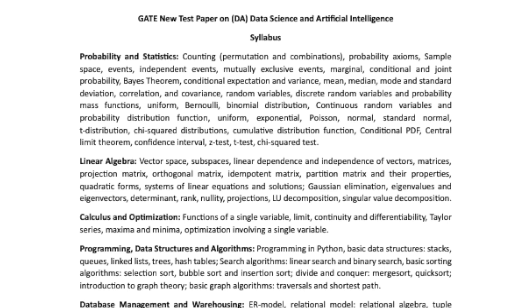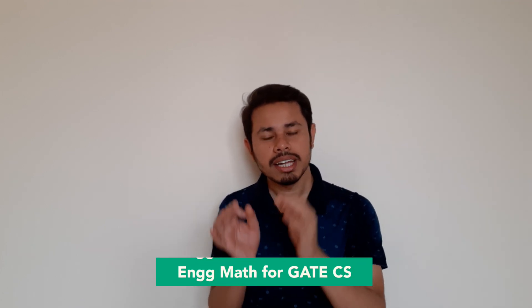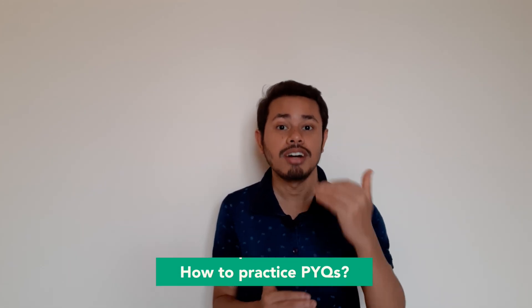Let's start from the beginning. In the syllabus there is a probability and statistics section. Most of the probability sections are already inside the engineering mathematics section of GATE Computer Science, so it won't be difficult for computer science students. Prepare probability from any book, any video, or any course — that will be enough. You might ask how to practice previous questions, since this is the first time data science will be hosted by GATE 2024.